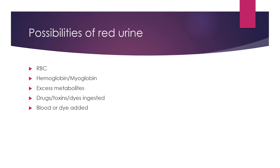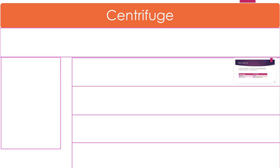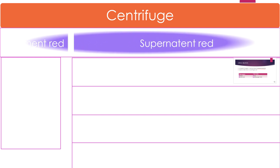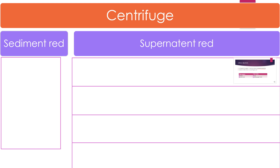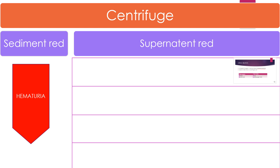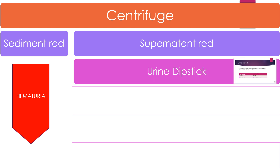Suppose you have ruled out food, metabolites, and drug consumption. What is left is whether it is actually RBCs, or whether it is hemoglobin or myoglobin. To differentiate, centrifuge the urine. If the sediment is red, it is definitely RBCs because RBCs settle down. If the supernatant is red, you need to do a urine dipstick to determine if it is hemoglobin, myoglobin, or neither.